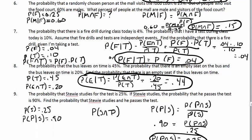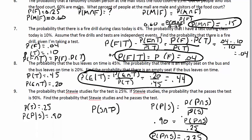Number nine: the probability Stewie studies for the test is 0.25, and if Stewie studies the probability he passes is 90%, so P(Pass|Studies) = 0.90. We're looking for P(Studies and Passes). Multiply 0.25 × 0.90 = 0.225. That takes you through the answers for these conditional probability examples.